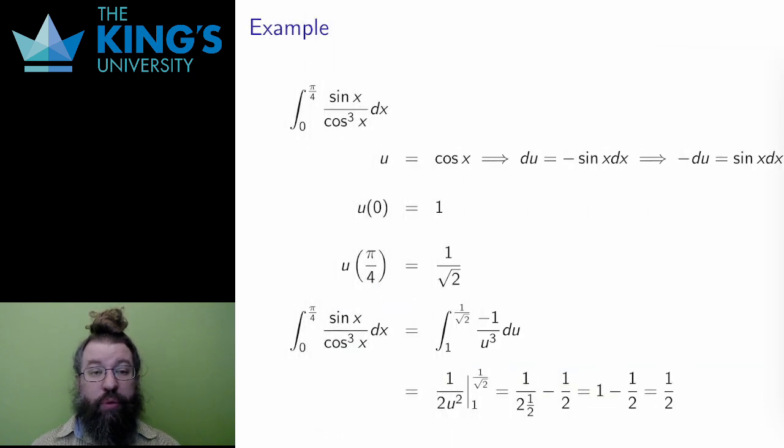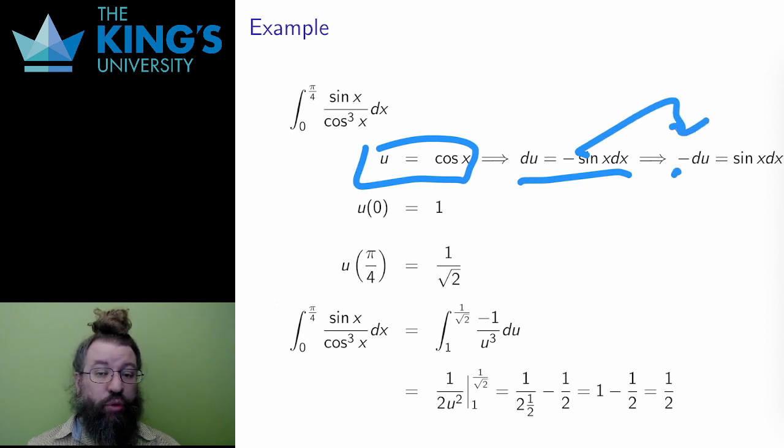Here is one more example. I'll try the substitution u equals cosine of x to make an easier denominator. The derivative of cosine is negative sine, so du is negative sine x dx. I'll multiply both sides of this by negative 1 to get negative du equals sine x dx, and this matches the piece in the integral that I am trying to replace.